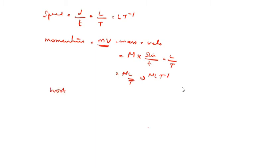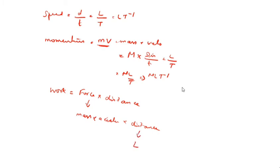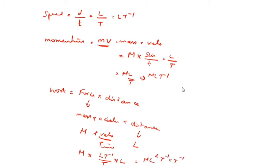What is work? Work is equal to force into distance. Force equals mass into acceleration. Acceleration is velocity by time, which is LT⁻¹ by T equals LT⁻². So work equals M into LT⁻² into L, which gives ML²T⁻².